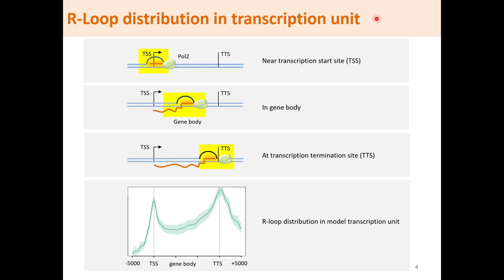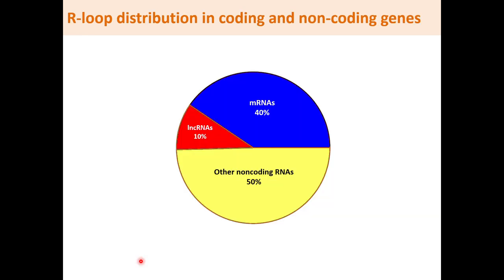For mRNA genes, R-loops can form in locations near the transcription start sites (TSS), in the gene body region, or at the transcription termination sites (TTS). R-loops occur at much higher frequencies at TSS and TTS, as shown in this characteristic R-loop distribution profile along the transcription unit. Overall, R-loops are found in 40% of mRNA genes, 10% of lincRNA, and 50% of all other non-coding RNA genes.